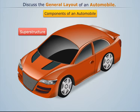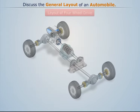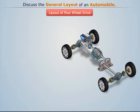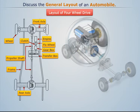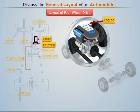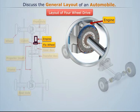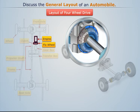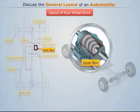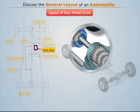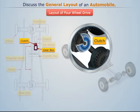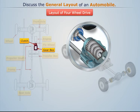The layout of a four-wheel drive automobile can be shown as here. We see that the torque produced by the engine is transmitted to the flywheel, which is connected to the gearbox through a clutch. The clutch and the gearbox are collectively known as the transmission system.